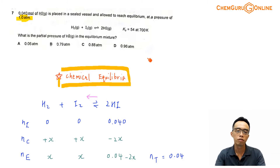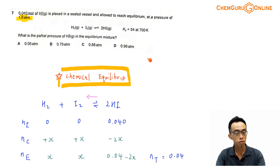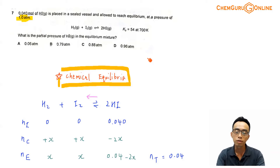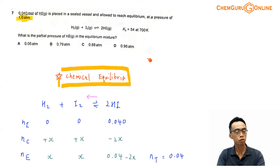Hi everyone, this is Maverick Poir, the chemistry guru. In this video, we want to go through the suggested solution for 2020 A-levels H2 chemistry, paper 1, question 7.